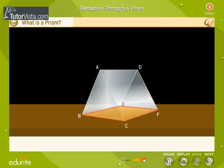One of the rectangular surfaces, BCFE, is called the base of the prism. The other two inclined surfaces, ABED and ACFD, are known as the refracting surfaces.